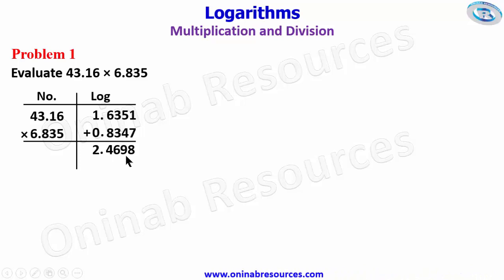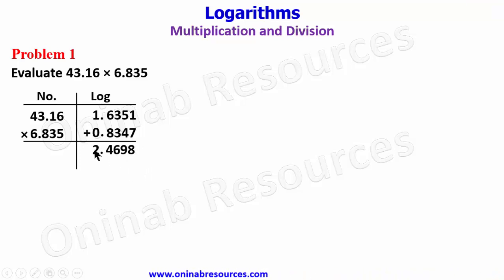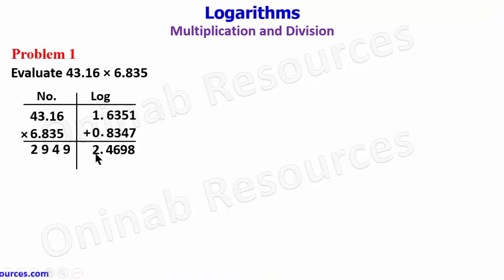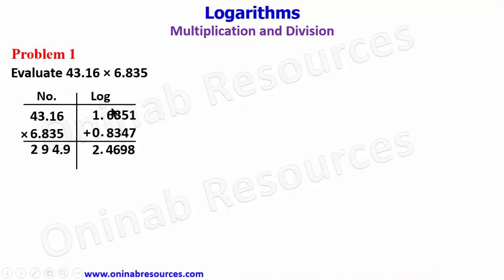From the sum of the logarithms we find the antilogarithm of 2.4698. We leave the integer part and go to the antilogarithm table: check .469, differences of 8, giving 2949. Coming back to the integer part, 2 plus 1 becomes 3. We count 3 digits and place the decimal point — 1, 2, 3 — immediately after the third digit. So 43.16 times 6.835 equals 294.9.